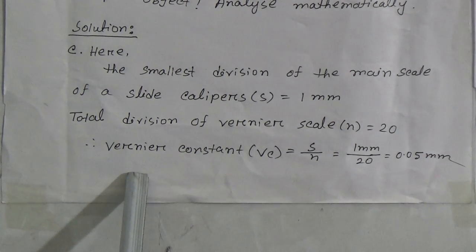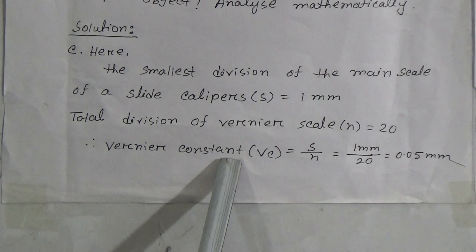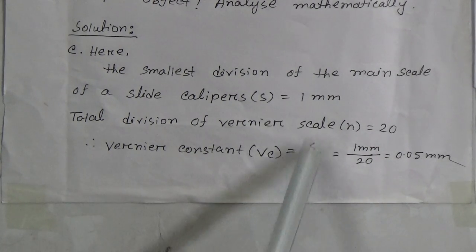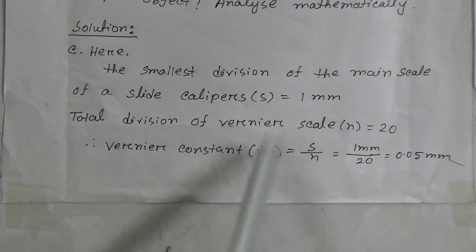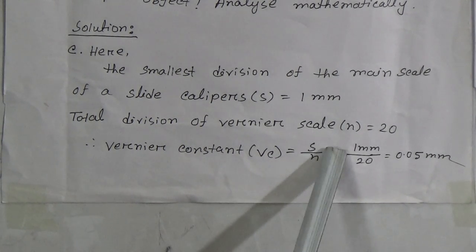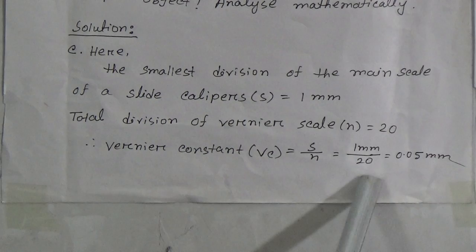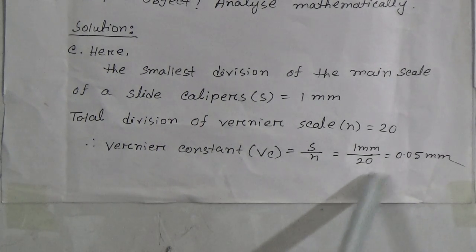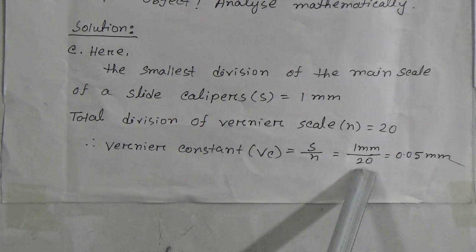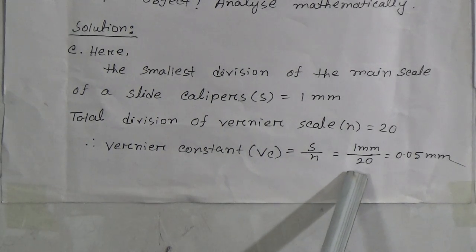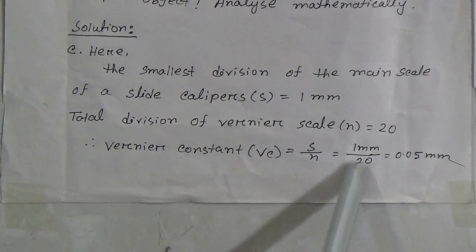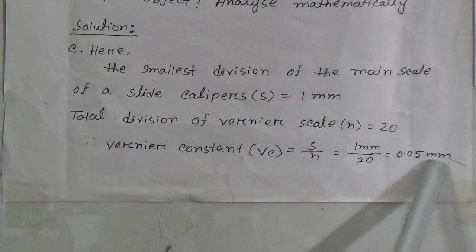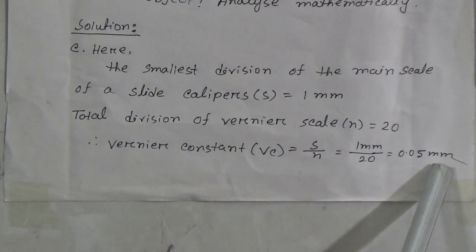Now we know the formula: Vernier constant, denoted by VC, equals S divided by N. Putting the value of S equal to 1 millimeter and N equal to 20, after calculating we get the result 0.05 millimeter.